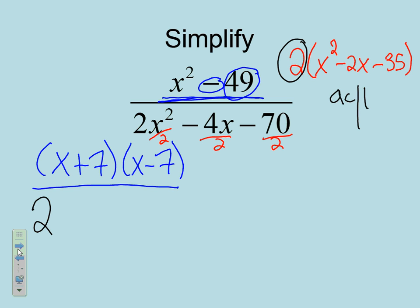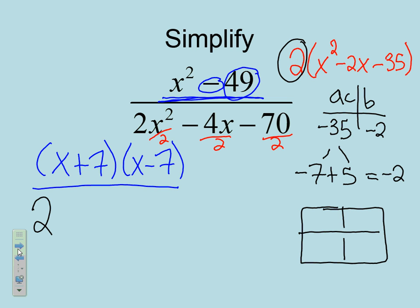Now, I'm just going to worry about this trinomial here. So, if I take a times c, add it up to b, I have negative 35 and negative 2. Two factors of negative 35 that add up to negative 2. Negative 7 and 5. If I add those together, I get negative 2. Plug it into my box. So, I have x squared, negative 7x, 5x, and negative 35.